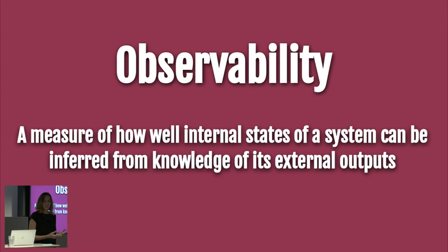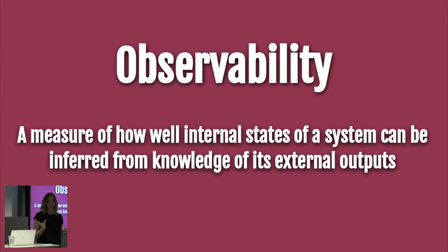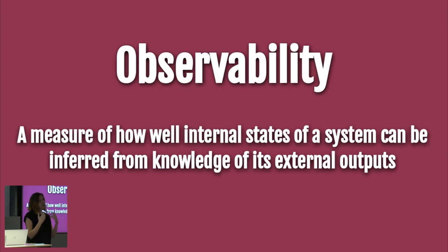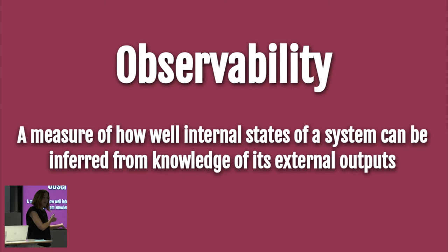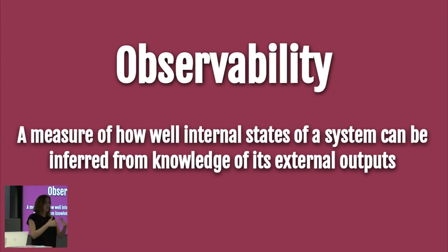This is why we needed to change the way we understand our systems in production — and that's where observability comes into place. Observability comes from control theory, not from software. The definition is: a measure of how well internal states of a system can be inferred from knowledge of its external outputs. Monitoring is an action — it's something an operations team does. Observability is a quality — it's something your system needs to have so you can understand it and answer questions about it.